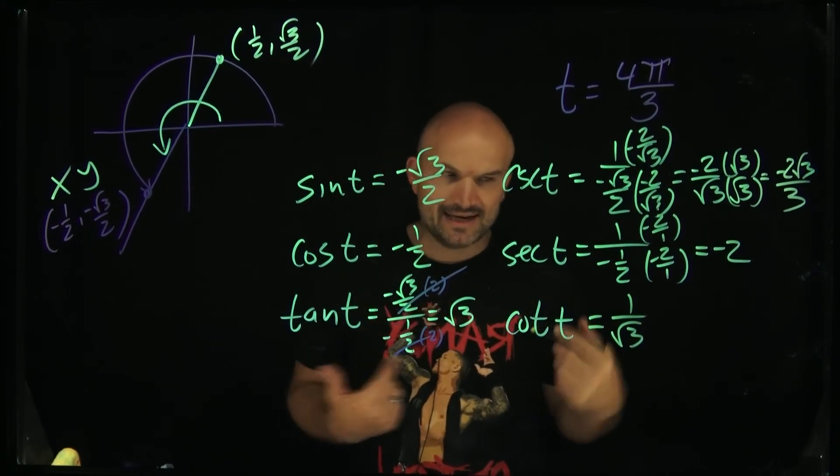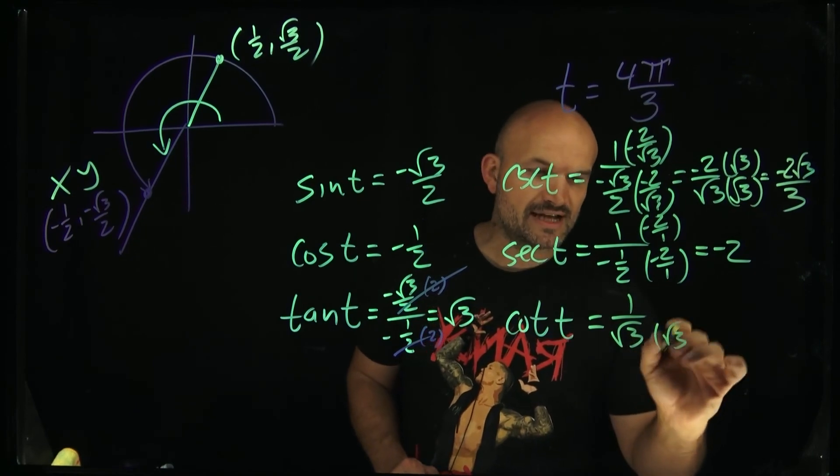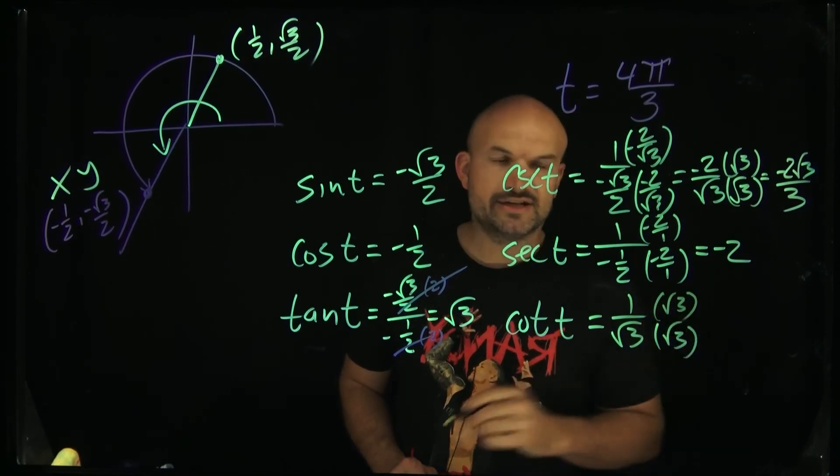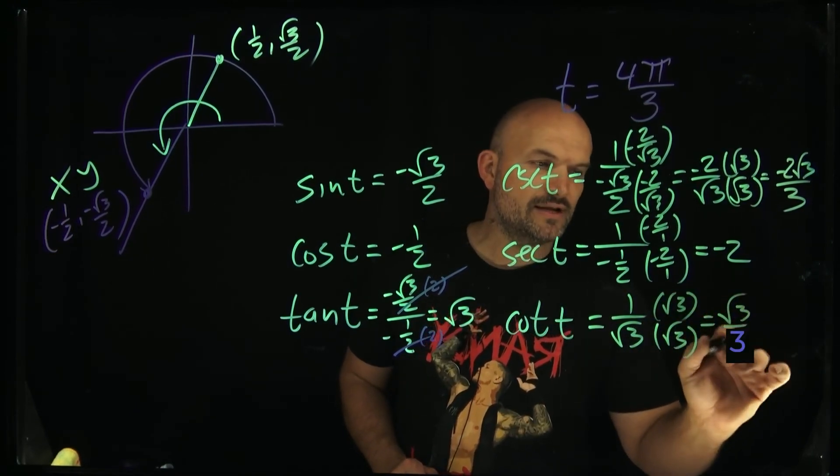And therefore, now all you simply need to do is rationalize the denominator to get your final answer, which is going to be a square root of 3 over 2.